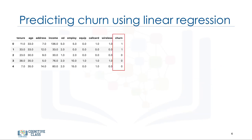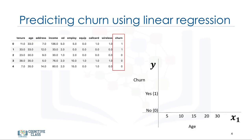What if we want to predict churn? Can we use the same technique to predict a categorical field such as churn? Say we're given data on customer churn, and our goal is to predict the churn of customers based on their age. We have a feature, age denoted as x1, and a categorical feature, churn, with two classes: churn is yes and churn is no. As mentioned, we can map yes and no to integer values 0 and 1.